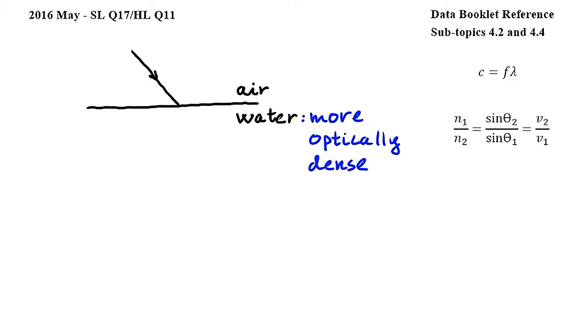I wrote down a key concept that we will use to solve this question. Water is more optically dense than air, which means that light slows down as it passes from air to water.